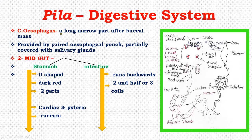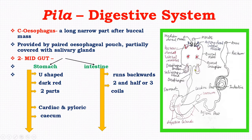The third part of the foregut is the esophagus. The buccal mass leads into a long, narrow esophagus. A pair of esophageal pouches, partially covered with salivary glands, open into the lumen of the alimentary canal. These pouches store food temporarily and digestion begins in them.